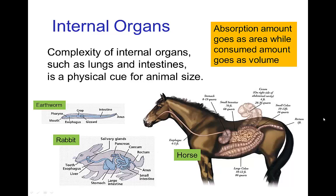It may not be obvious, but the complexity of the internal organs of animals is closely related to this connection between dissolving and area and volume. The amount absorbed in internal organs — whether it's food or air absorbed by lungs — goes as the area. However, the amount that needs to be consumed goes as the volume. So something like an earthworm will have very simple internal organs, a rabbit more complicated, and a horse much more complicated still.